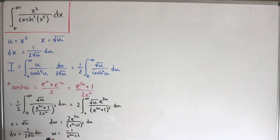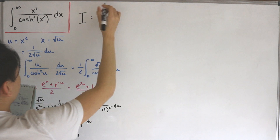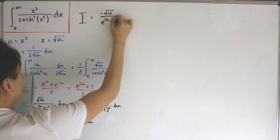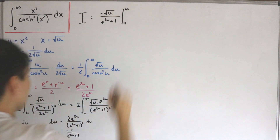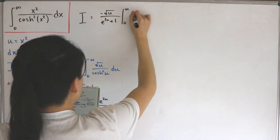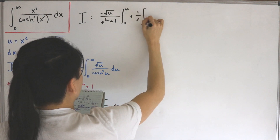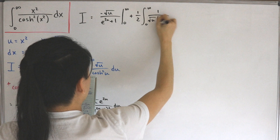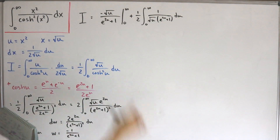Applying the integration by parts formula and assembling everything, we get: negative the square root of u divided by (e^(2u) + 1), evaluated from zero to infinity, minus the integral of w times dv. Factoring out the negatives and the one-half, this becomes plus one-half times the integral from zero to infinity of 1 divided by (square root of u times (e^(2u) + 1)), du.